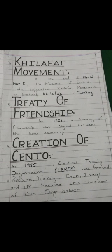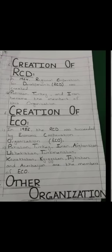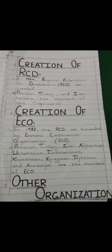Be careful while writing the names of organizations and dates. You can write extra material in the Treaty of Friendship, extra dates like the end of CENTO, and extra material related to the Khilafat Movement. Now the next heading is Creation of RCD, which was the next organization as a sign of friendship between Pakistan and Turkey.